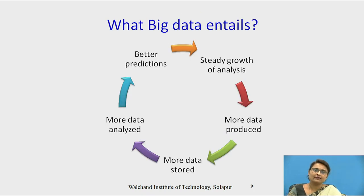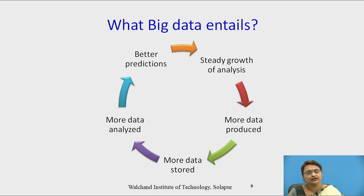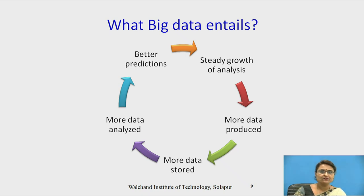Talking about what exactly big data entails — as more data is produced, more data is stored, and more data is analyzed. Therefore, as more data is analyzed, the predictions provided are more accurate and the growth of analysis will increase. So it is basically a cycle of big data.